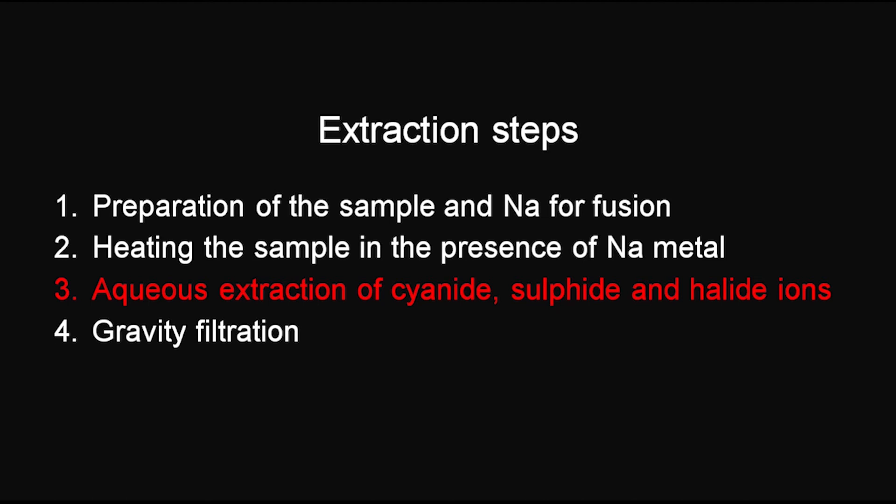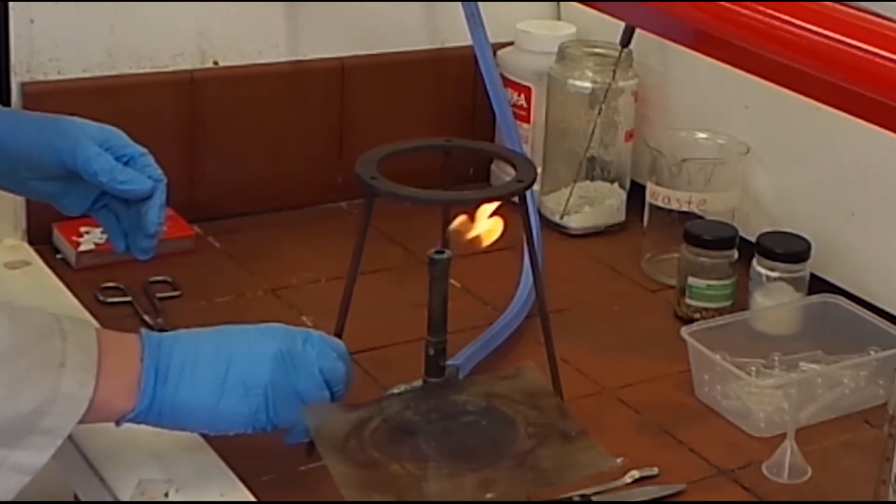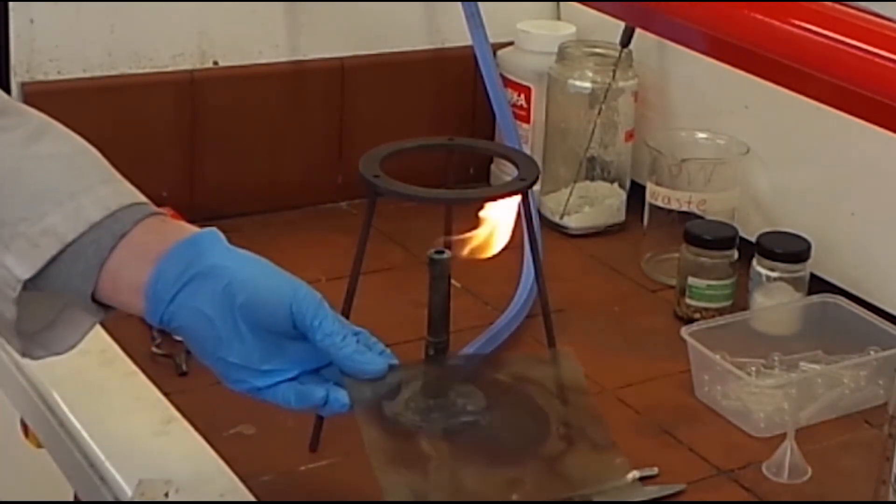Next, the contents need to be boiled. Swirl the contents in the beaker and make sure everything is combined. Then, put the contents on top of the Bunsen burner to allow them to boil.